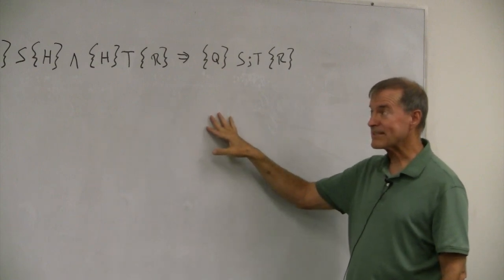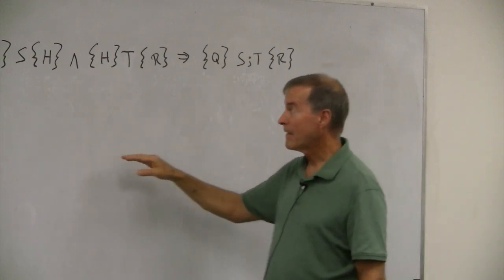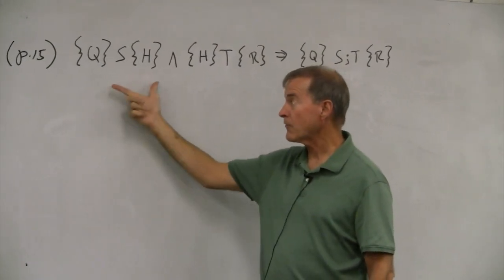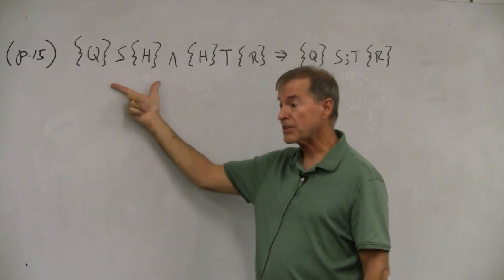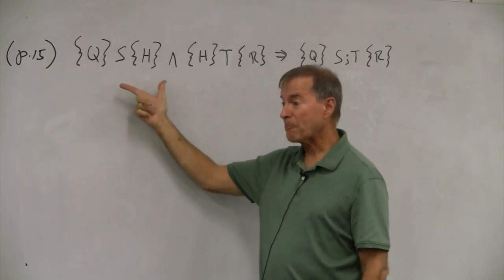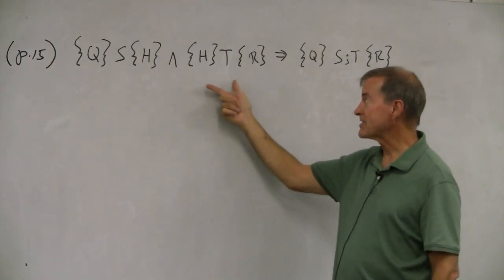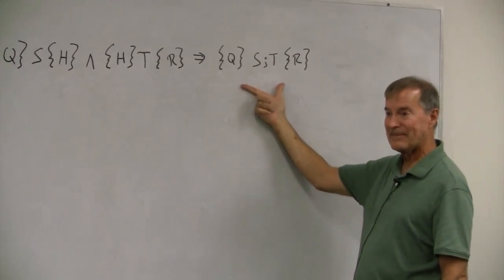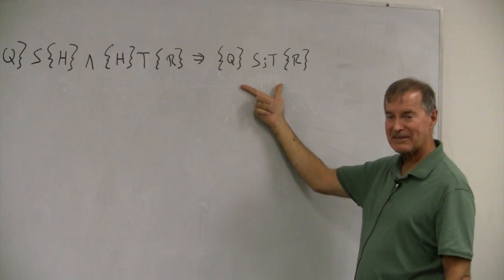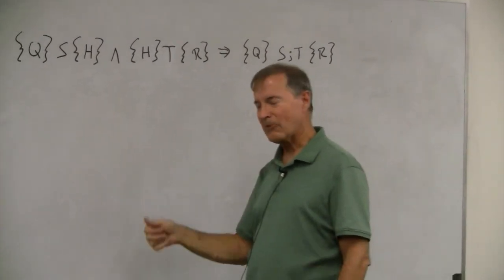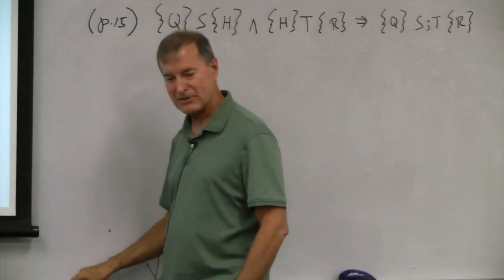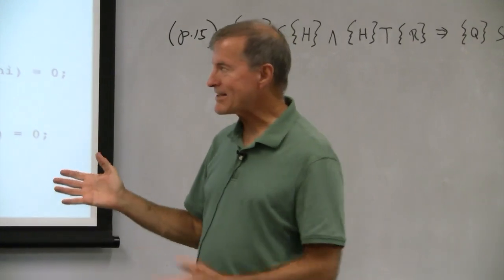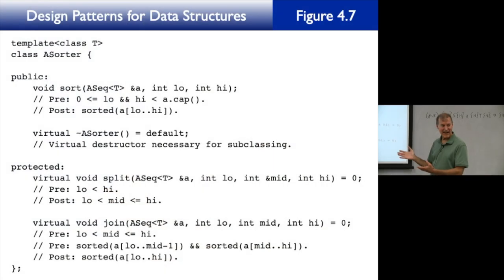What does this say? This H is the postcondition of the first one. If the postcondition of the first one is the precondition of the second one, then this is a valid Hoare triple. And that's exactly what's happening here — that's exactly what's happening with sort.